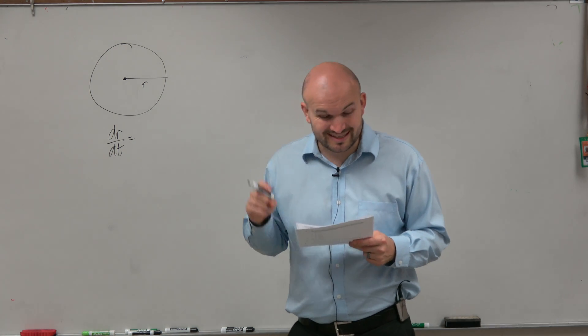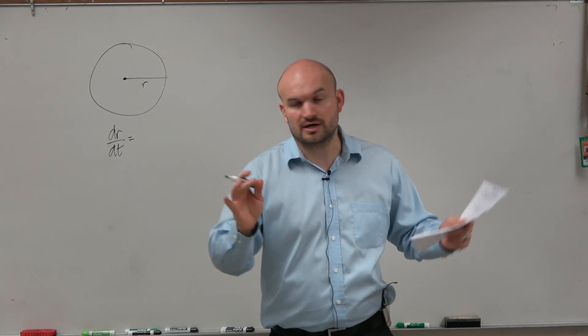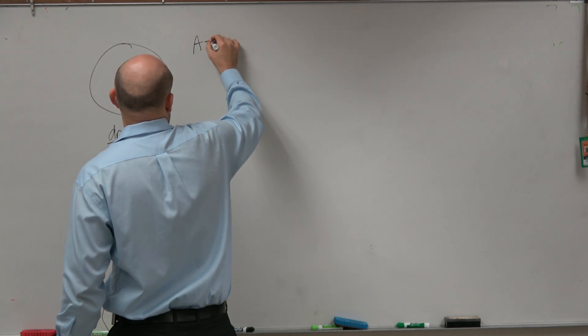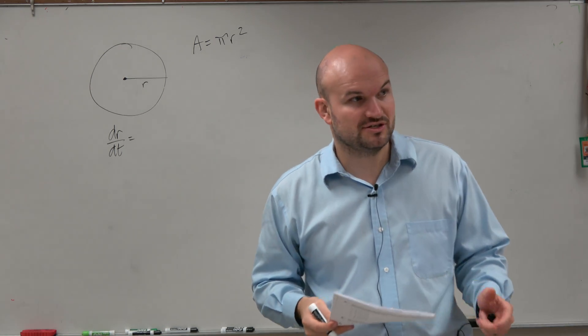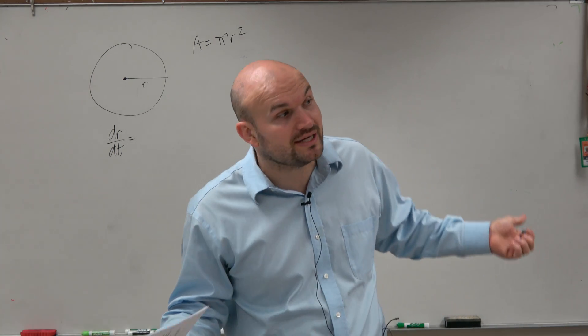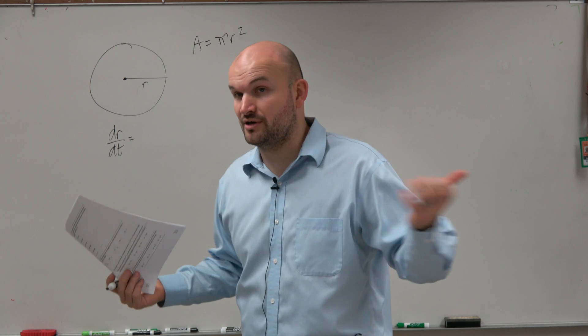It says the rate of increase in the area of the circle. So area of the circle, let's write that out there. Area equals pi r squared. Just mentions area. I don't know if I'm going to need to use this, but I might. So I'm just going to write it down.